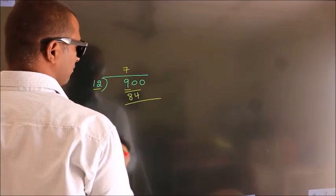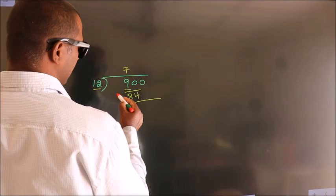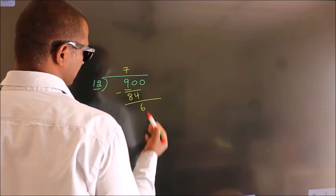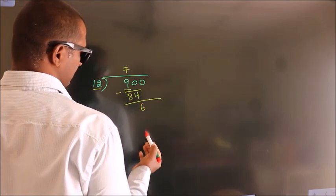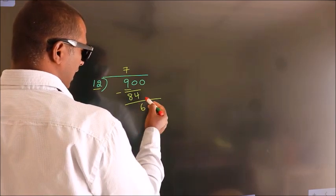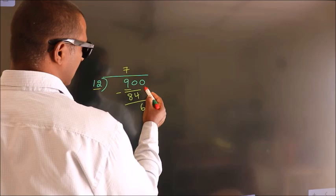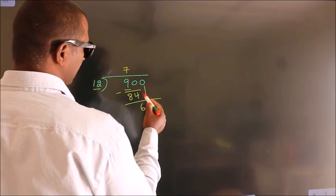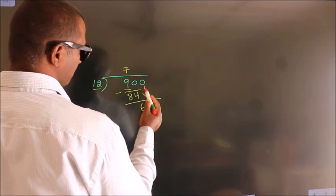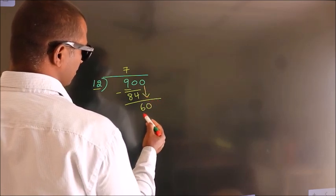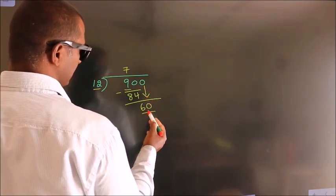Now we should subtract, and we get 6. After this, bring down the beside number — so 0 comes down, giving us 60.